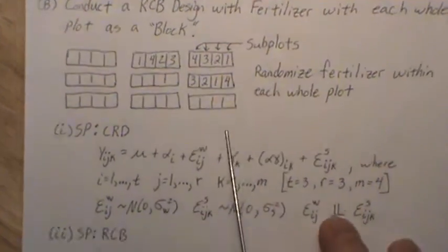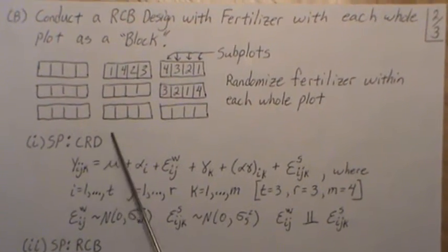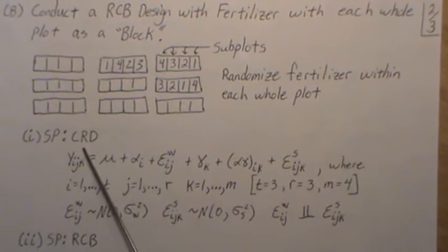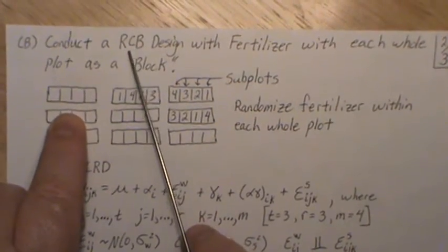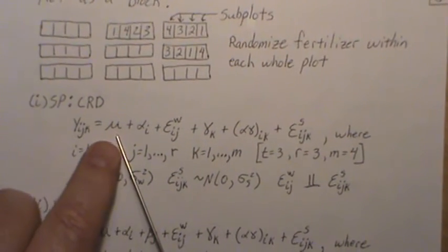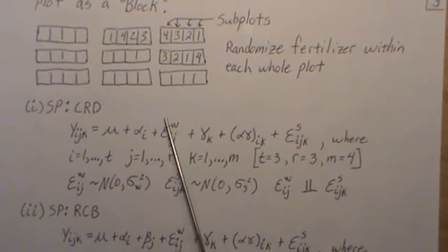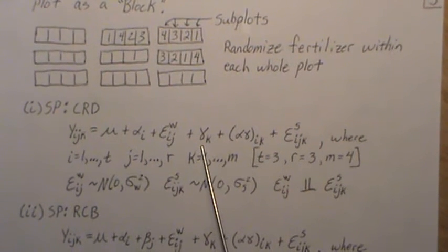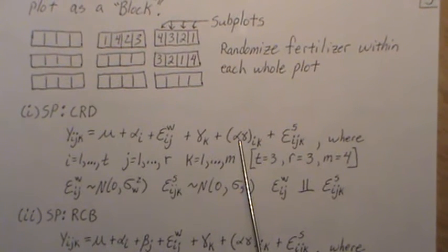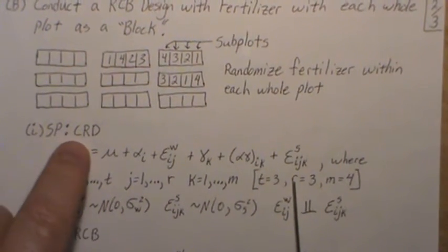Now the model becomes the split plot for the completely randomized design. The first part describes the first randomization, and the second randomization is always part of a randomized complete block design. The model is Y_ijk = mu + alpha_i (insecticide effect) + whole plot error + gamma_k (fertilizer effect) + insecticide-by-fertilizer interaction + subplot error.